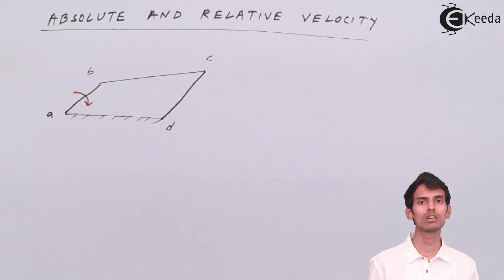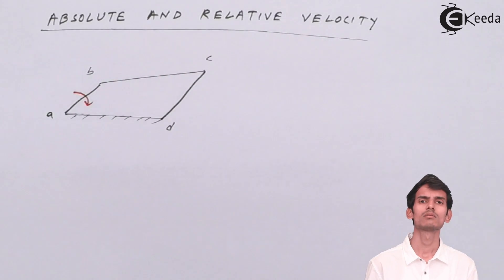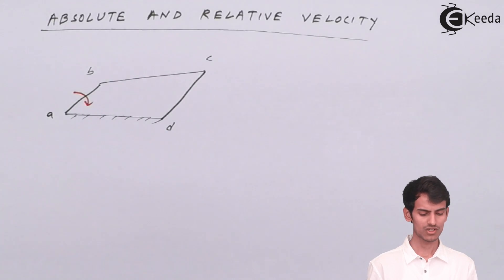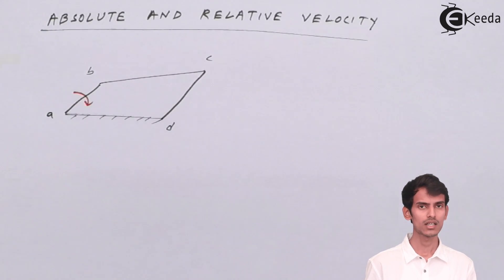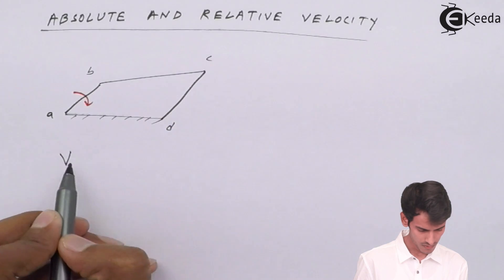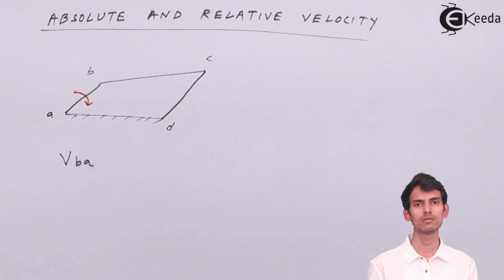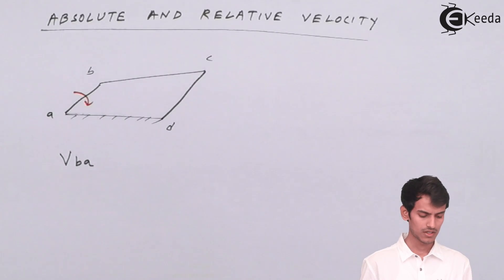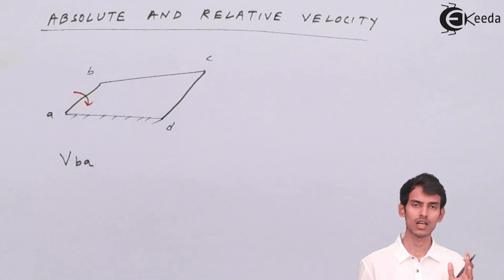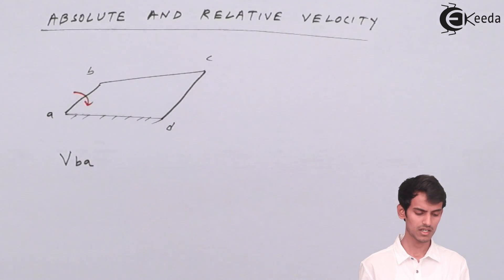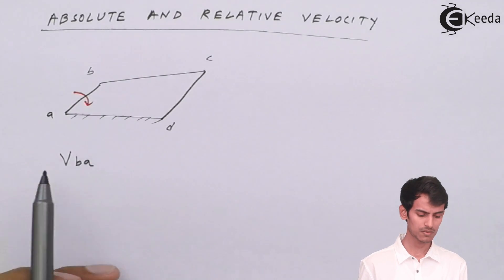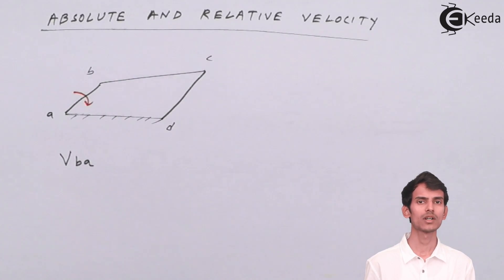Velocity of B with respect to A is absolute velocity because A is fixed. Absolute velocity is the velocity of any point with respect to a fixed point. So since A is fixed, velocity of B with respect to A is absolute velocity of B. VBA means velocity of point B with respect to point A — the first alphabet indicates the point, the second indicates with respect to which point.